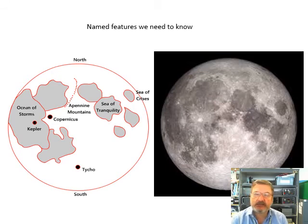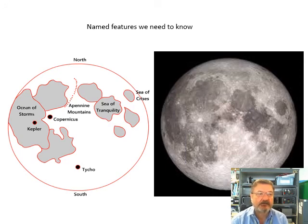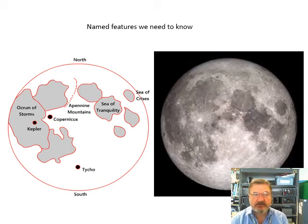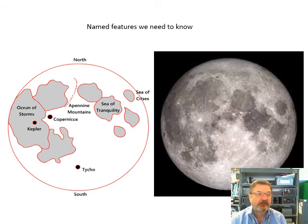These are the named features you need to know — you must make an effort to learn these. For the maria: the Sea of Tranquility — this is where Apollo 11 landed at Tranquility Base; the Sea of Crises; and the Ocean of Storms. Mountains: the Apennine mountains. And there are three craters to know: Tycho at the bottom, which I've already mentioned, then Kepler and Copernicus — obviously named after two other very important astronomers. Look at the diagram, look at the photograph, and match them up.